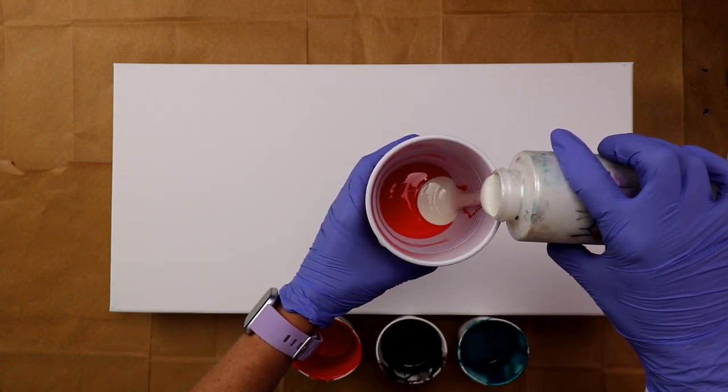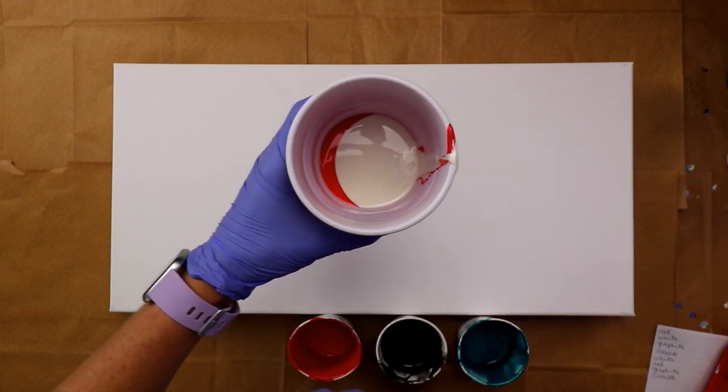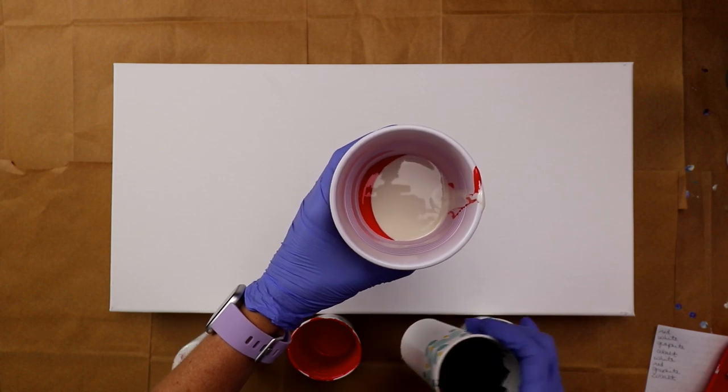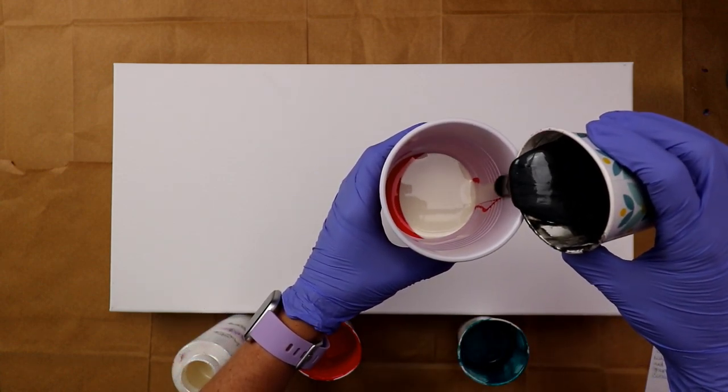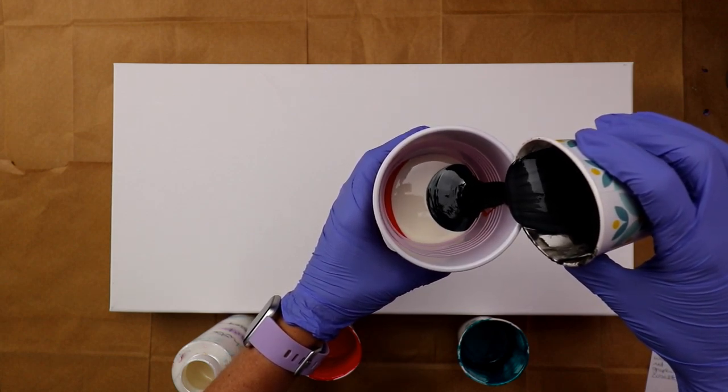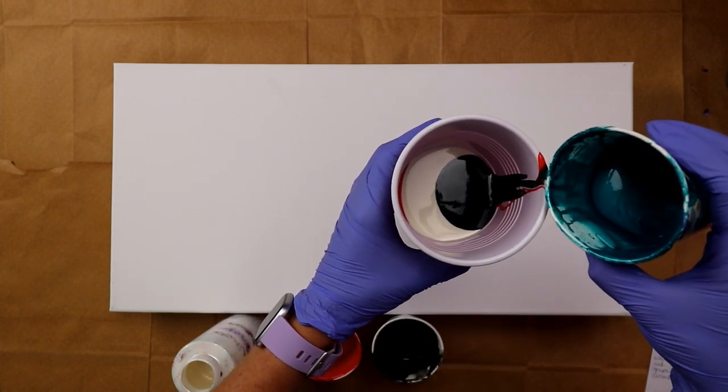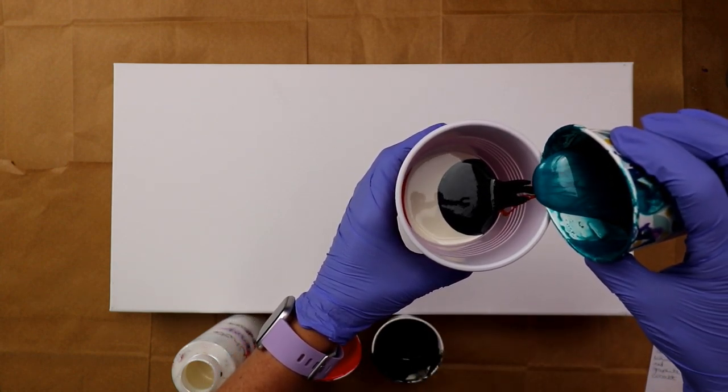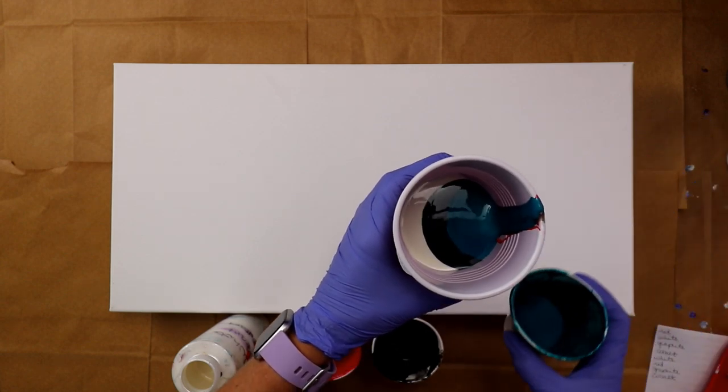All my colors are mixed with Liquitex pouring medium, Flotrol, and water. If you haven't watched my videos before, my pouring medium is 60% Liquitex pouring medium, 30% Flotrol, and 10% water. I do not have any silicone in any of my paints.